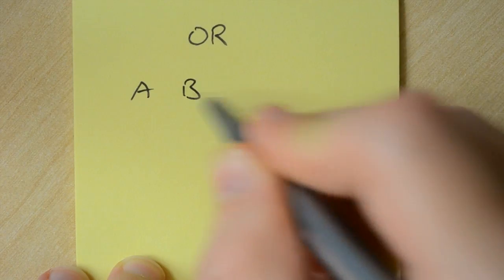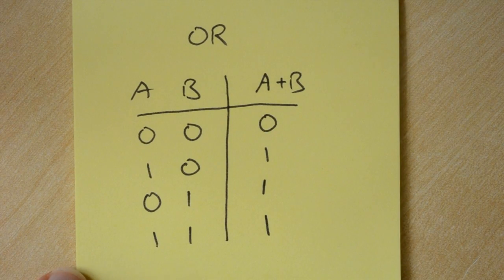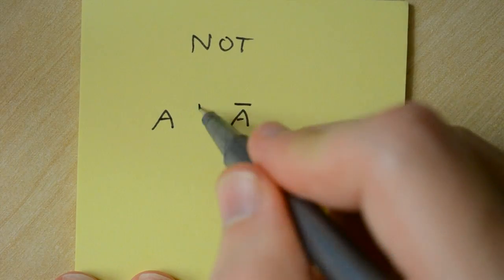The OR operator returns true if at least one of the inputs is also true. And a NOT operator simply inverses an input.